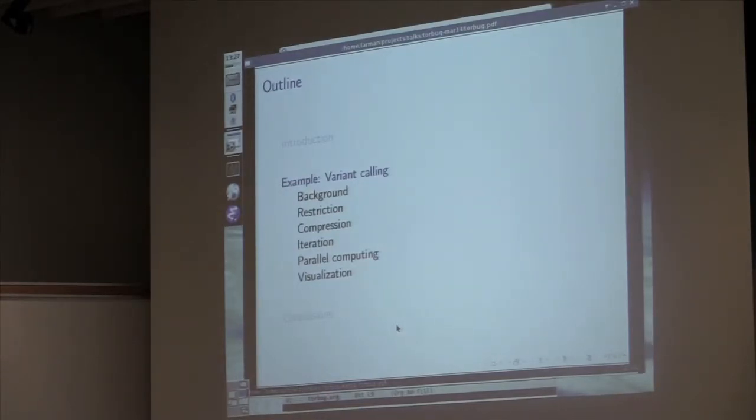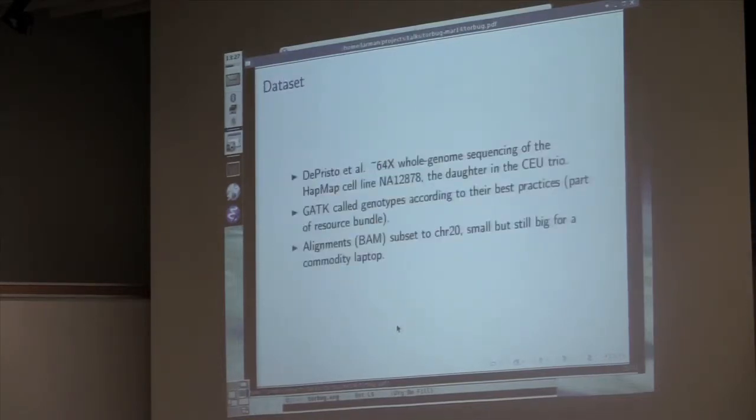I'm going to take you through an example showing off these different techniques in variant calling and how that works with Bioconductor. The dataset we're going to work with is from the GATK project. They published 64x whole genome sequencing into this European cell line, and the daughter NA12878. They called genotypes on this with their best practices. They make the alignments available for chromosome 20. Even though it's just one chromosome, it's still more than big enough that you need these techniques if you're doing it on a laptop.